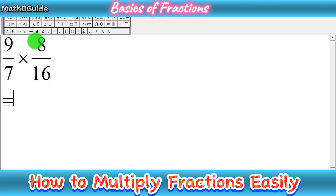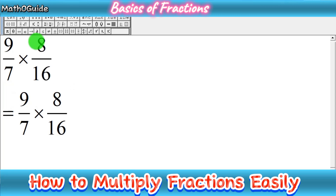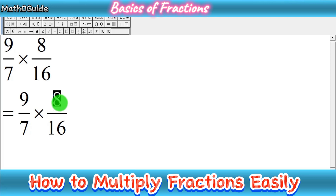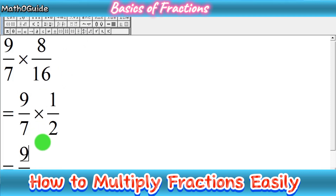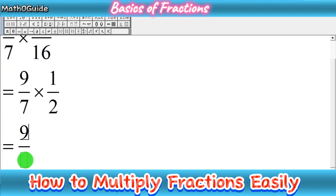Next, check within each fraction: 8 and 16 have a common factor, but 9 and 7 do not. So we cancel within that fraction first to simplify before multiplying. 8 times 1 is 8 and 8 times 2 is 16, so after cancelling, that fraction becomes 1 over 2, making our overall expression much simpler.